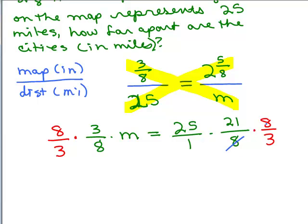The 8ths cancel, right? And also I can cancel that 3 into the 21, which is 7, makes my arithmetic a lot easier. Over on the left side, it completely cancels, right? The 3s cancel, the 8s cancel, so I'll be able to solve for M.